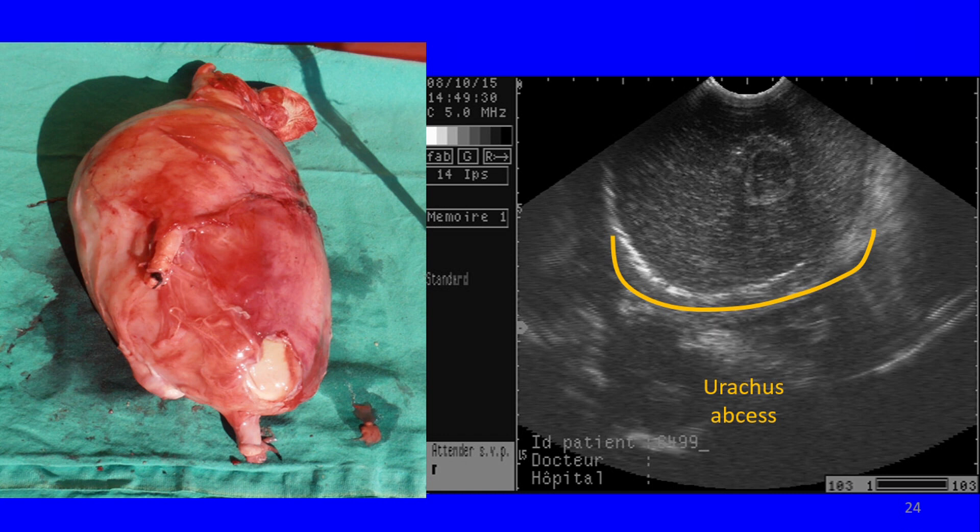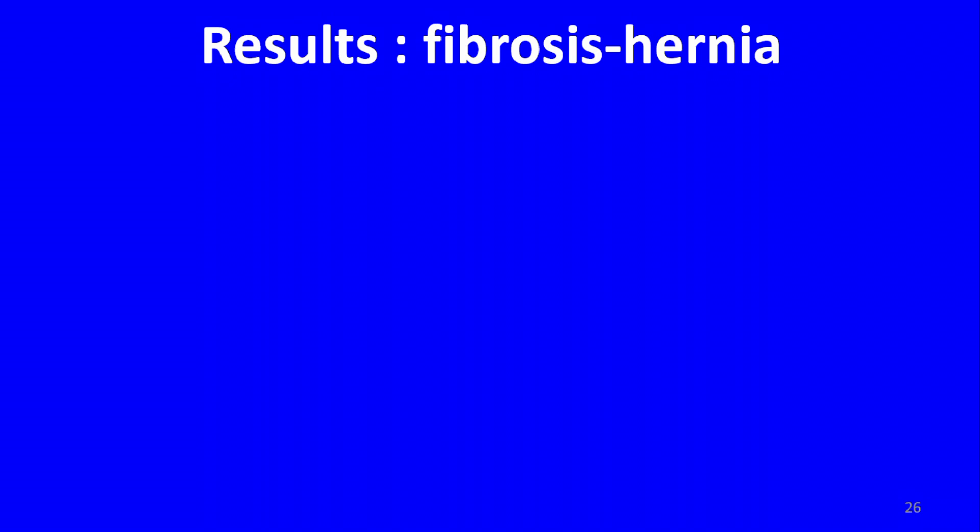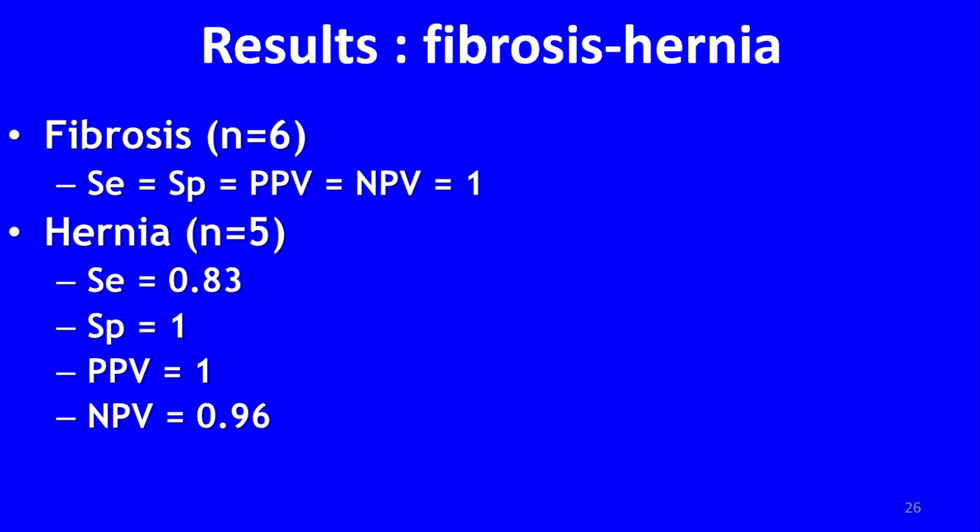Regarding the results: for fibrosis and hernia, we were excellent — and Nora Sesbrun was excellent too, with my student — because all values were excellent for fibrosis, meaning external non-inflammatory, non-infectious umbilical disorder. For hernia, we were almost quite perfect.